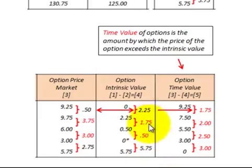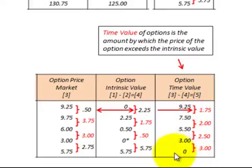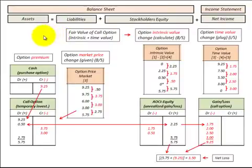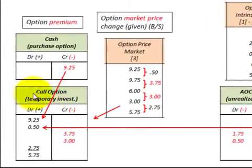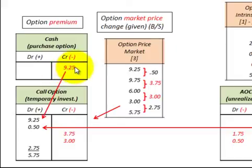We continue subtracting the intrinsic value change from the market value change each period. Looking at our time value across the option's life, we started at $9.25 and at the expiration date the time value was zero — it had no time value remaining. Now, here is how we account for this call option on our balance sheet and income statement. First, we set up the call option account as a temporary investment asset on the balance sheet and debit it for the call option premium paid — in this case $9.25 — and credit our cash account for that amount.